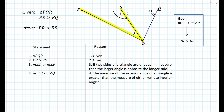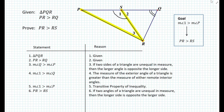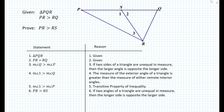Looking at steps 3 and 4, we can apply the transitive property of inequality. If measure of angle 1 is greater than measure of angle Q, and measure of angle Q is greater than measure of angle P, then measure of angle 1 must be greater than measure of angle P. After achieving this goal, we can now state that the length of PR is greater than the length of RS. The reason is the converse of step 3: if two angles of a triangle are unequal in measure then the longer side is opposite the larger angle. This completes the proof.